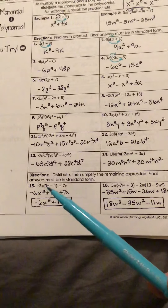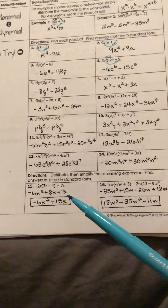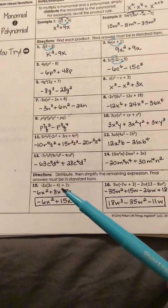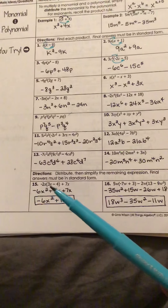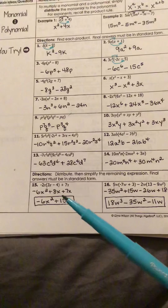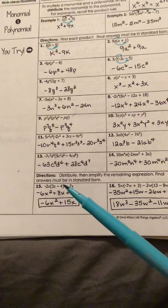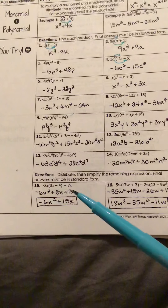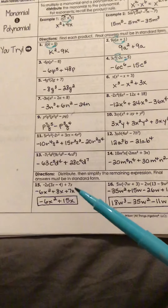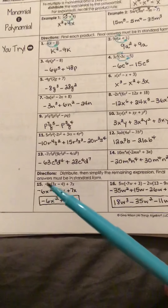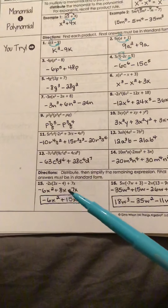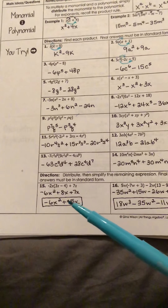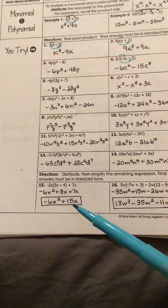You're going to distribute this out and then deal with any other expression that might be outside of all the distributing. The essence here is: after you distribute, if you find a term that is similar — like you have an x term, think of it as an apple — well, after you distributed you got another apple; it happened to be eight apples and you have seven apples, so you can combine those two to get 15 apples.